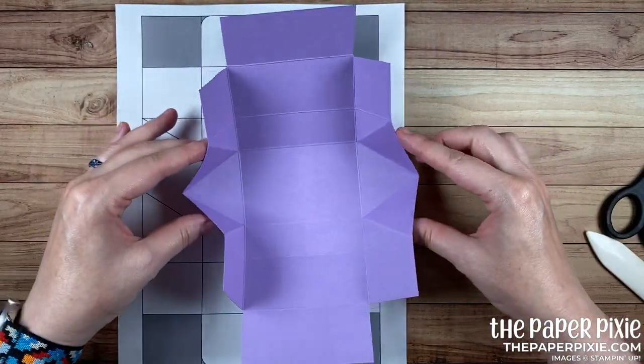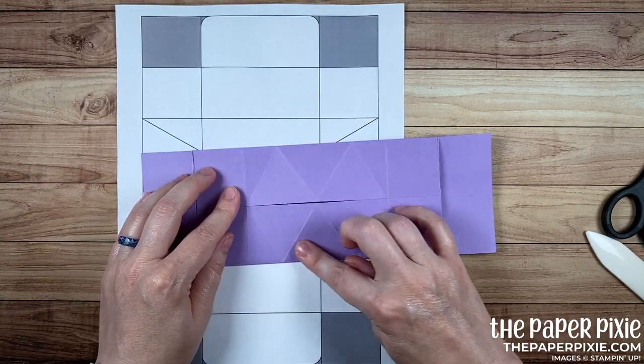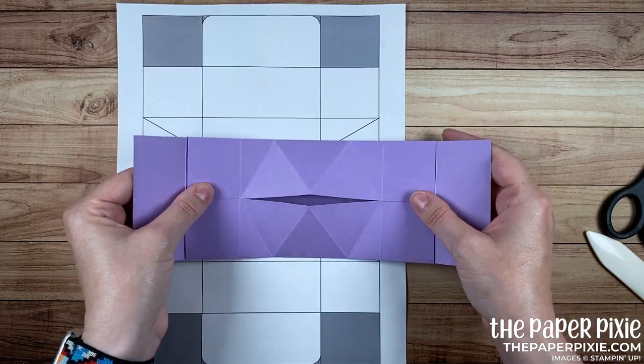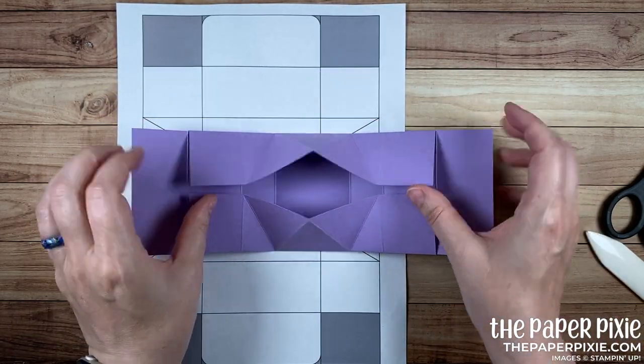And then we're just going to work our way around to get those diagonal score lines worked into place. All right so now when we fold these two sides in you're going to see they're going to meet up and then you're going to have sort of this hexagon shape with all these little triangles in there and this is how that box is going to open in the center. Such a cool box. I love this.